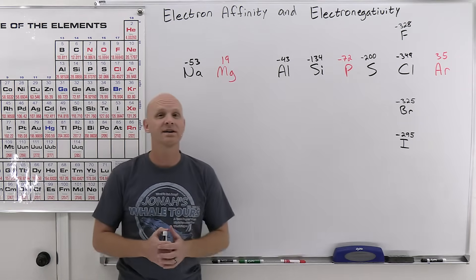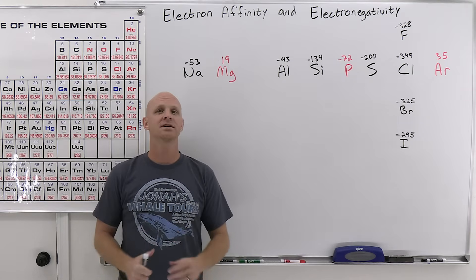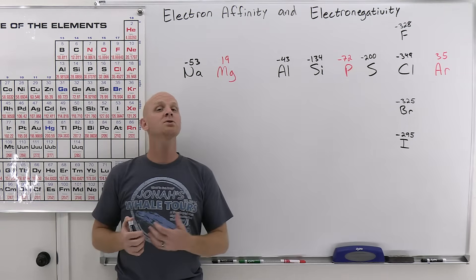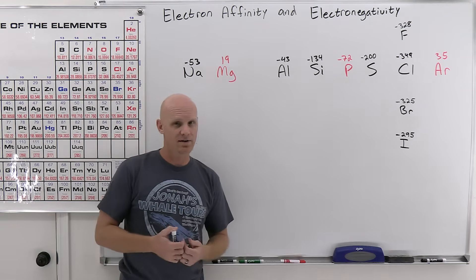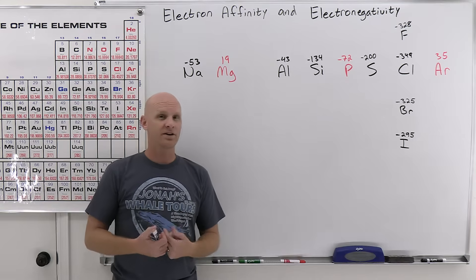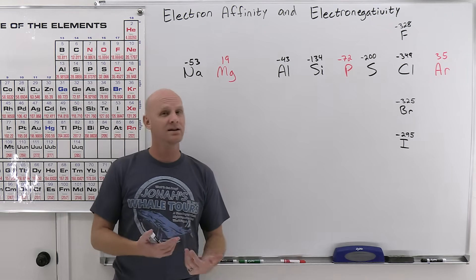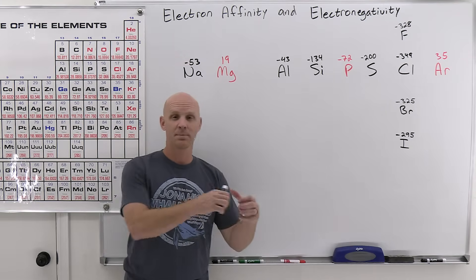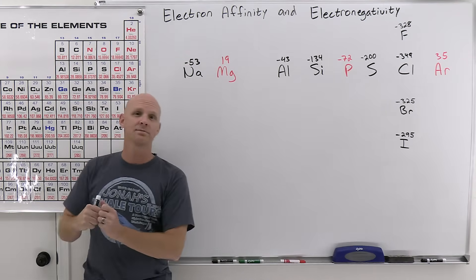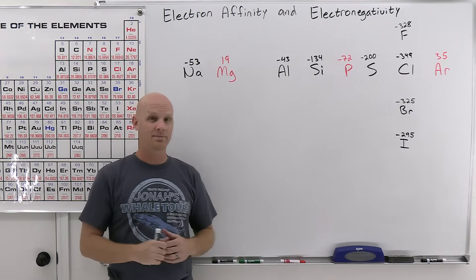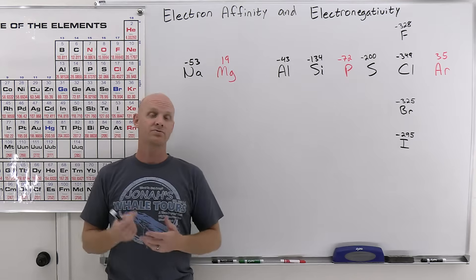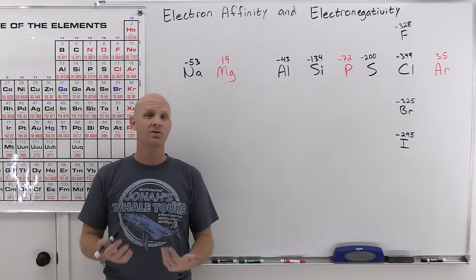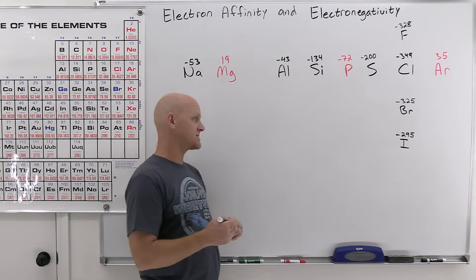Electron affinity is the exact opposite of ionization energy. Ionization energy was the energy required to remove an electron — now instead of losing an electron, we're going to talk about atoms gaining an electron. Whereas electrons are attracted to the nucleus and we had to pull them off an atom, you don't have to push them onto an atom — that's where they want to go, at least for gaining one. So most of these are going to be exothermic instead of endothermic.